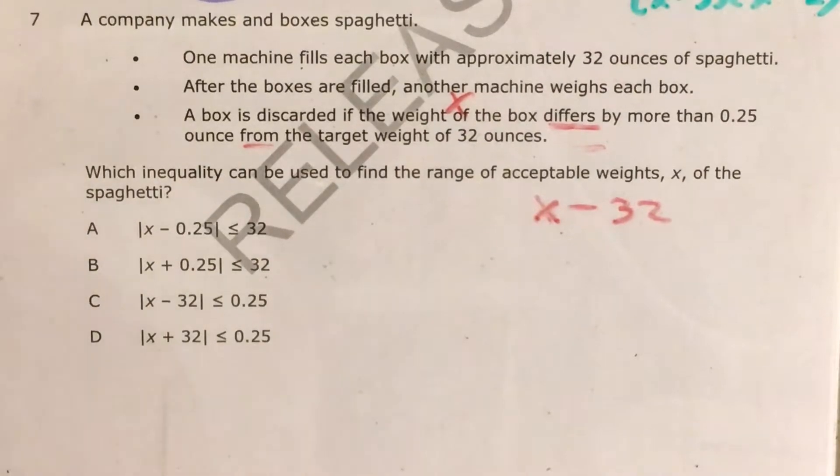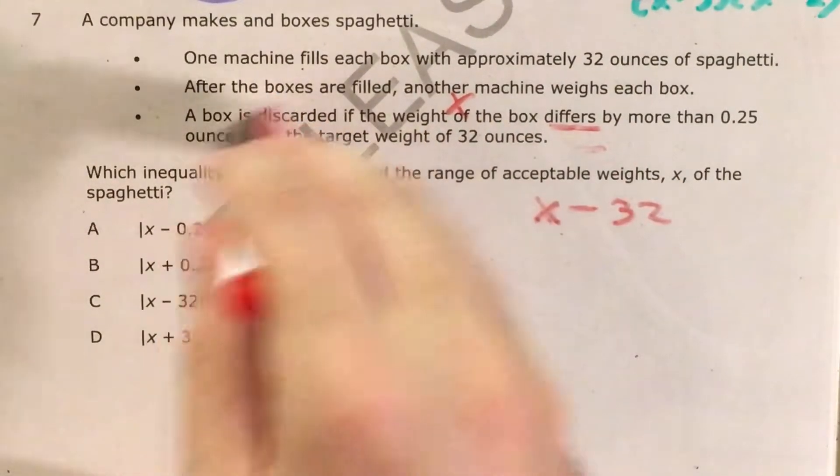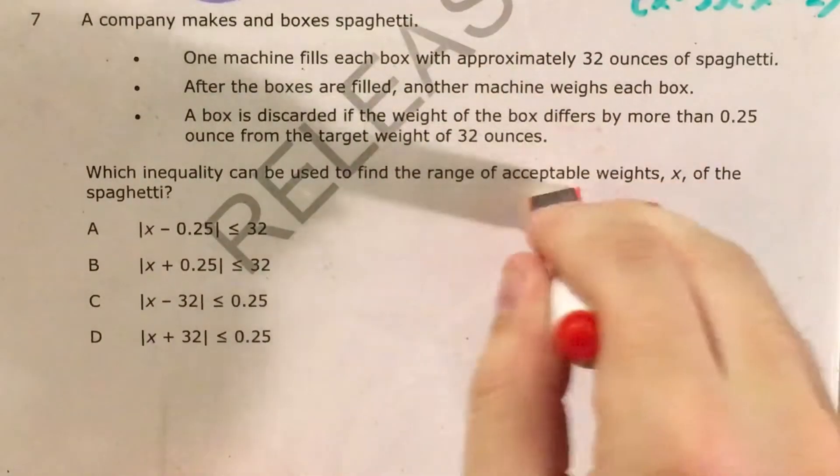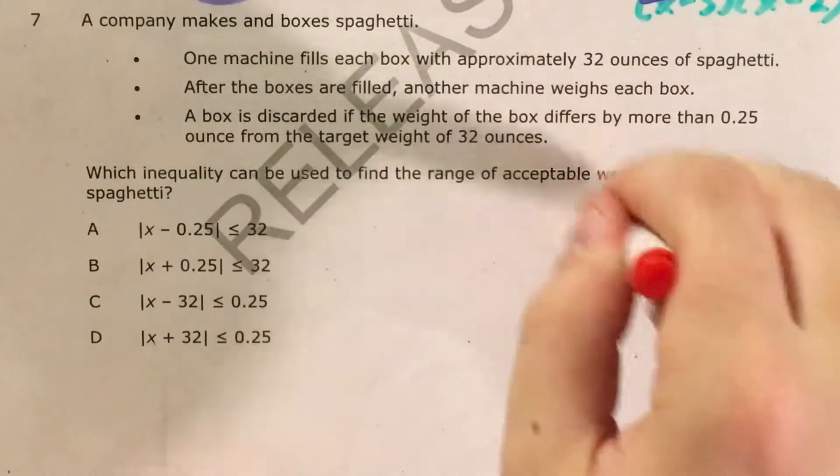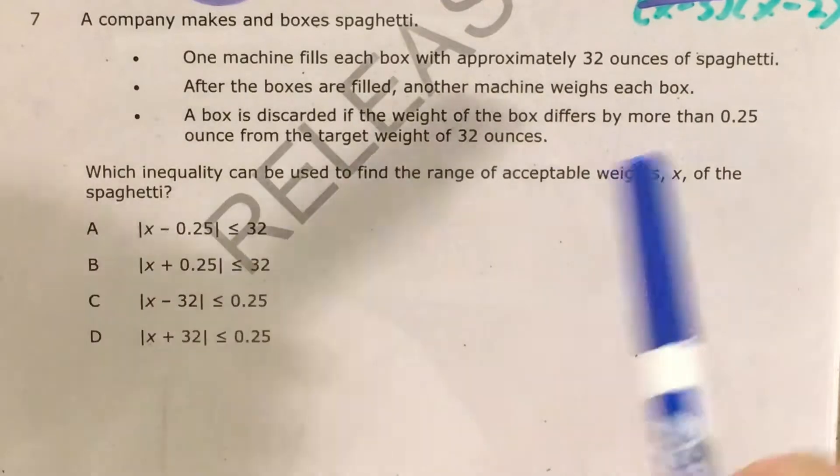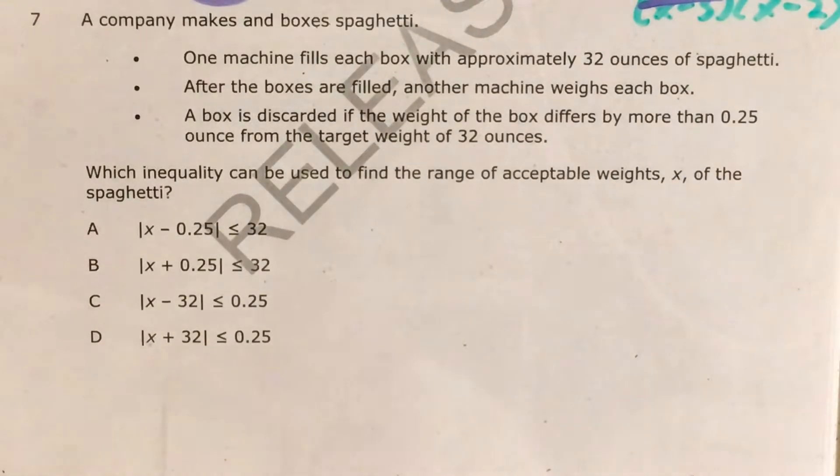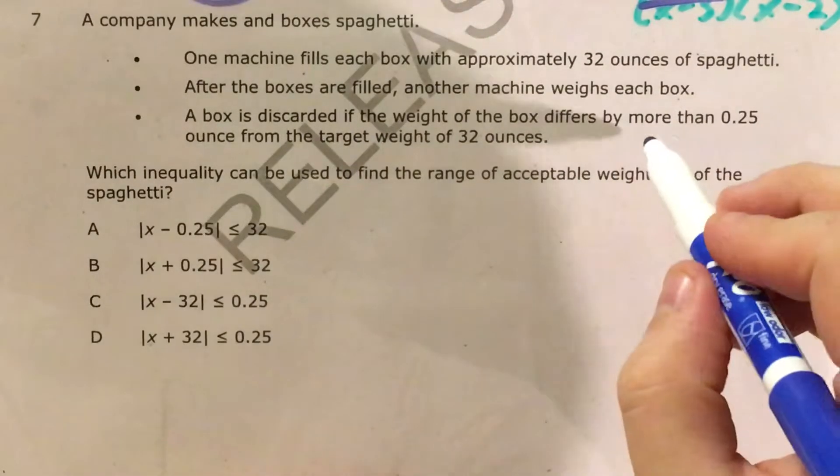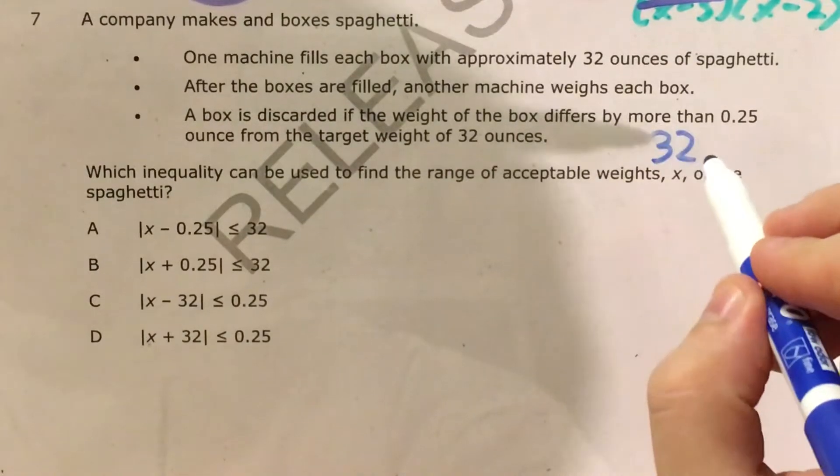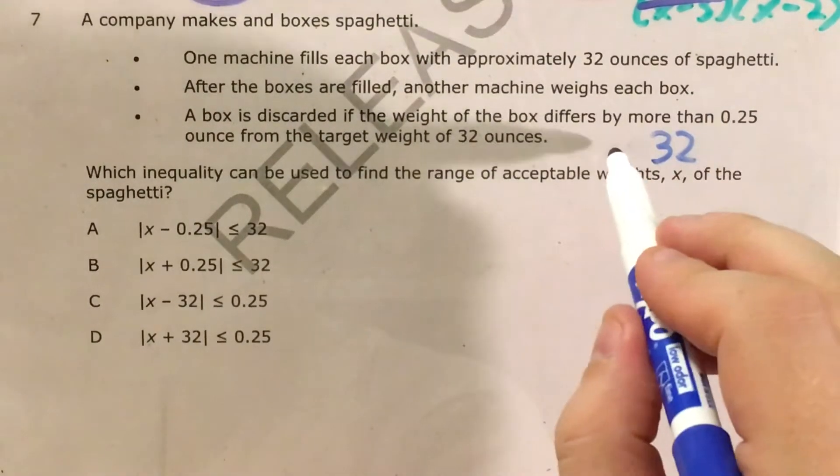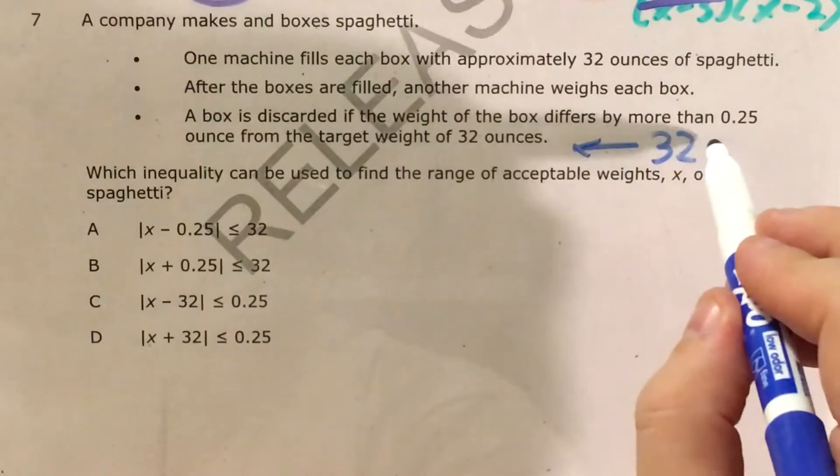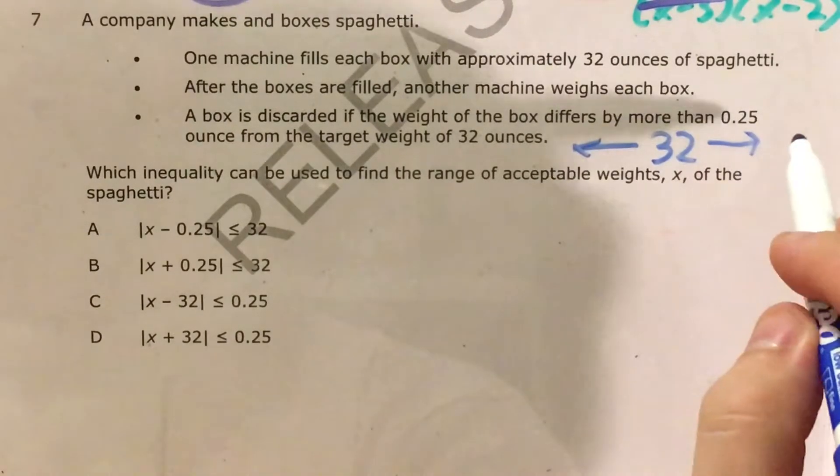Now, this word differs by more than a quarter of an ounce. I can actually interpret this another way to say that the box can be 32 ounces, that's ideal, but it can be a quarter of an ounce less or a quarter of an ounce more. If it's a quarter of an ounce more, its maximum weight is 32 and a quarter.